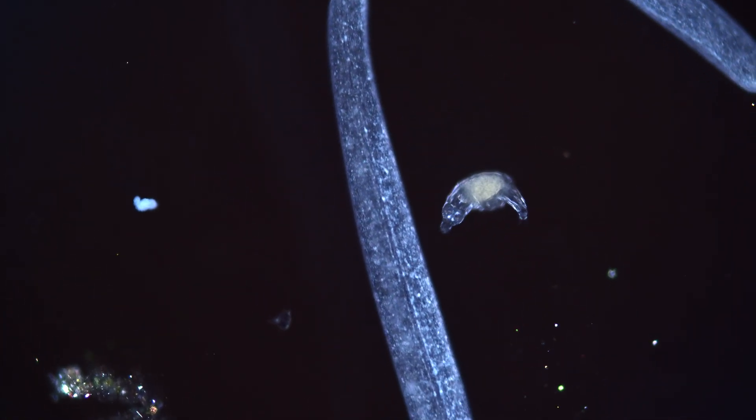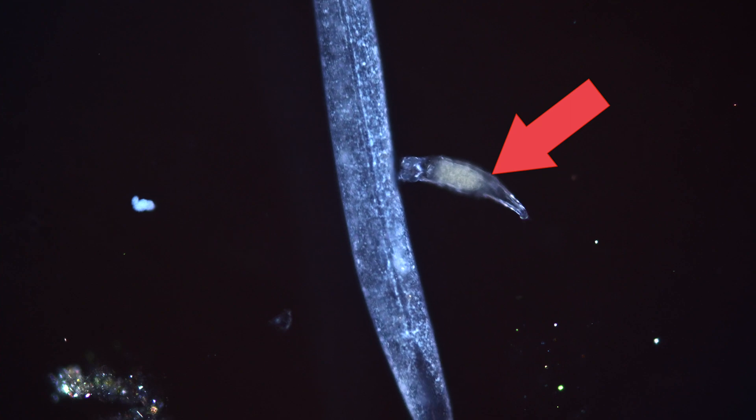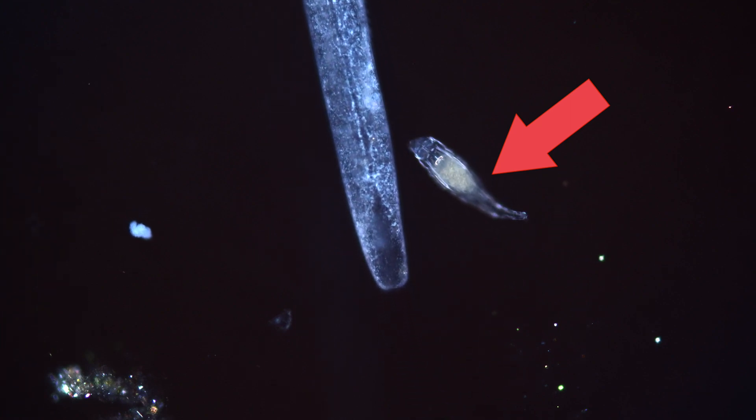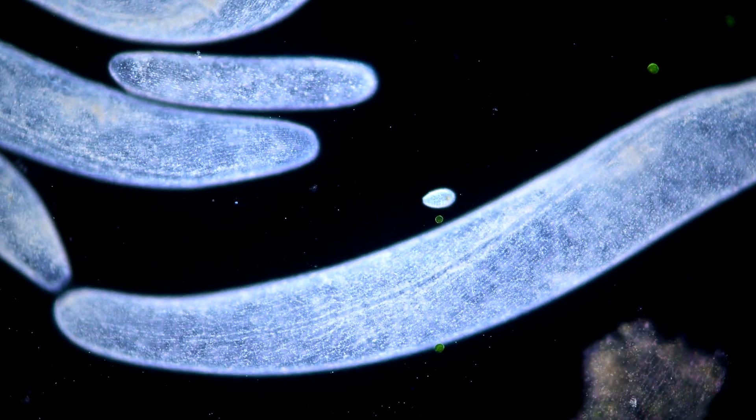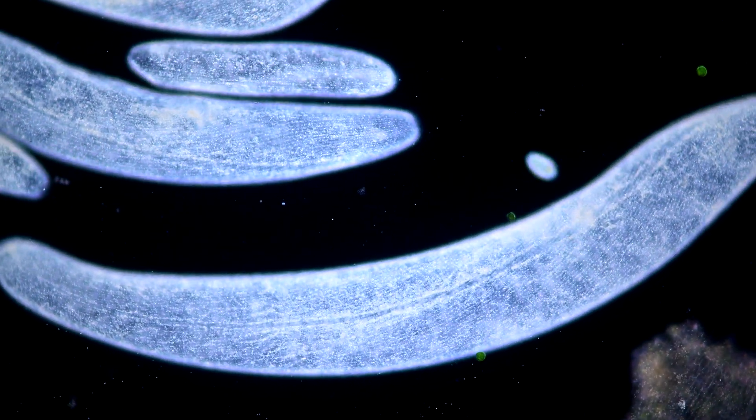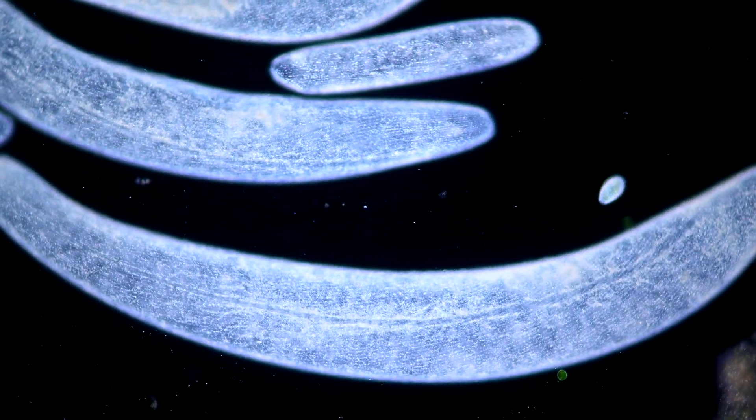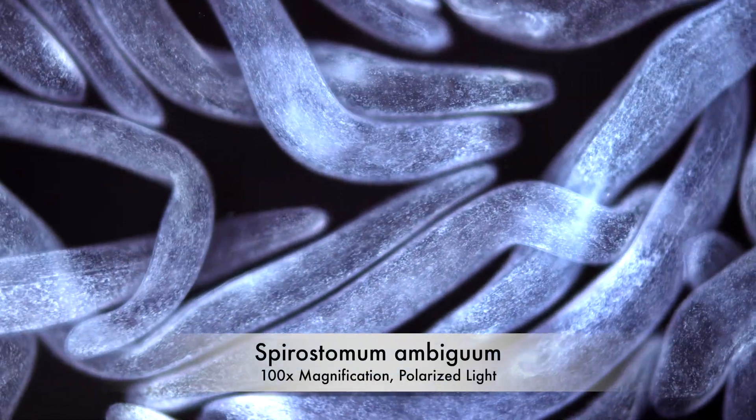Just to get some perspective, an average rotifer, a microscopic animal, is around one-fourth of a millimeter long but consists of a thousand cells. While Spirostomum is just one single cell, it is a giant for a microbe.